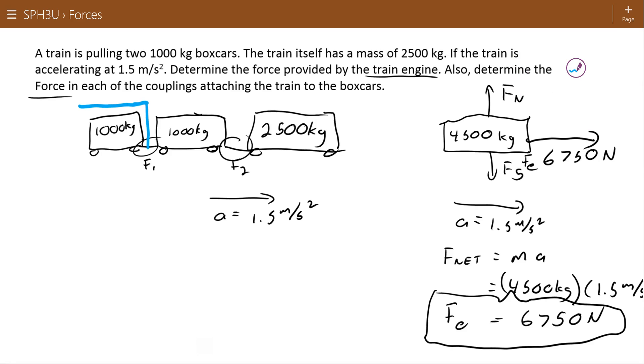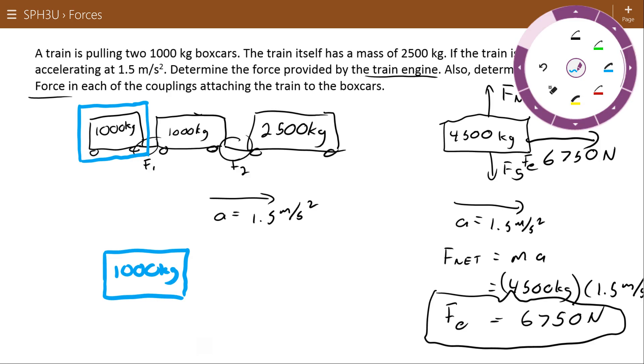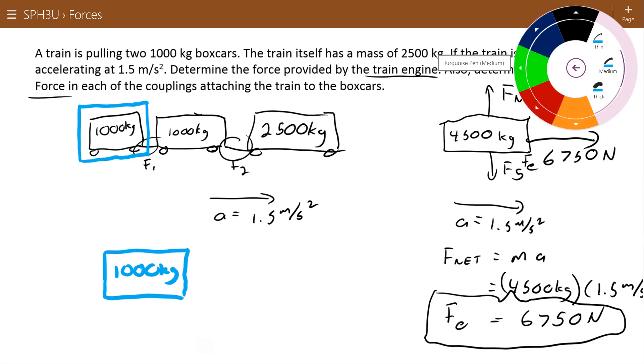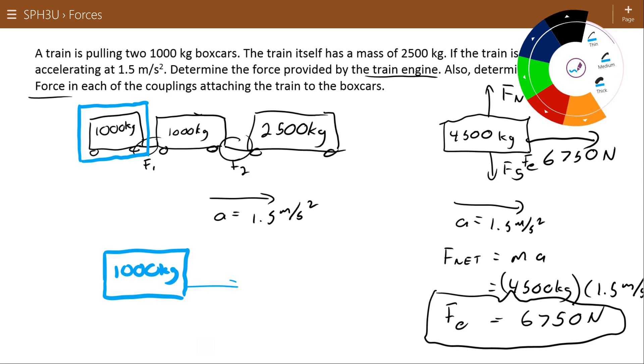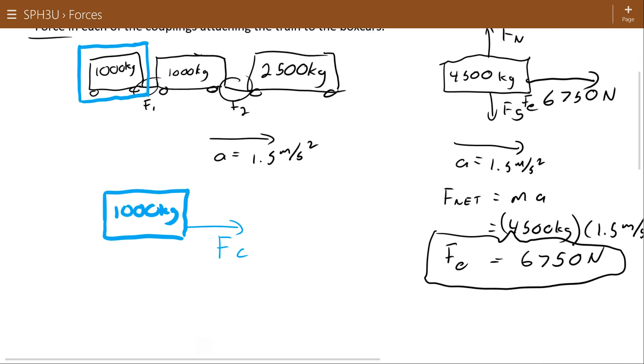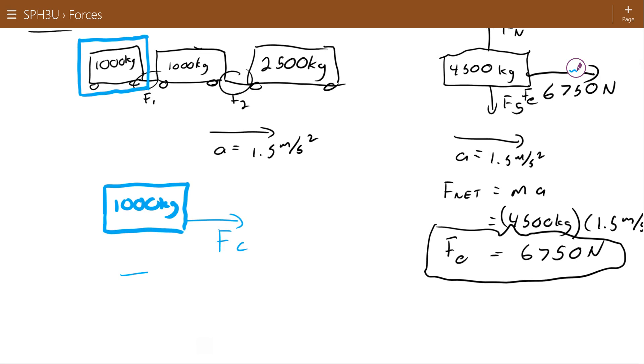That means my new object is 1,000 kilograms. And I have some force, the force from the coupling, pulling on that train. Again, I have an acceleration of 1.5 meters per second squared. So I can use Newton's second law to figure out what the net force acting on this object is.